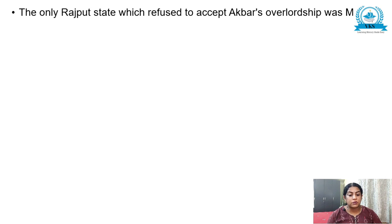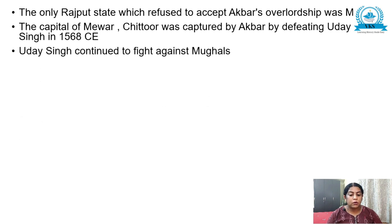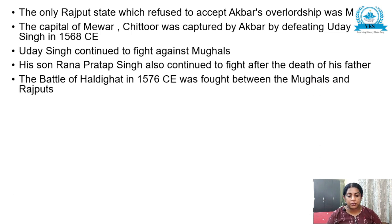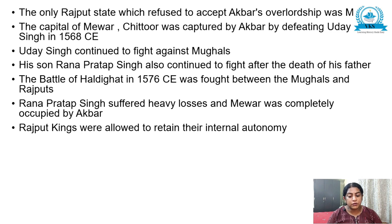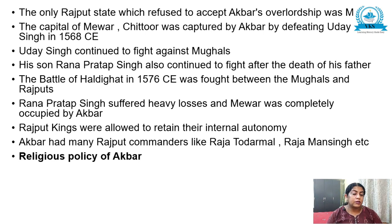The only Rajput state which refused to accept Akbar's overlordship was Mewar. The capital Chitor was captured by Akbar after defeating Udai Singh in 1568. Udai Singh continued to fight, and his son Rana Pratap Singh also continued the resistance after his father's death. The Battle of Haldighati in 1576 was fought between the Mughals and Rajputs. Rana Pratap Singh suffered heavy losses and Mewar was completely occupied by Akbar. Rajput kings were allowed to retain their internal autonomy, and Akbar had many Rajput commanders like Raja Todar Mal and Raja Man Singh.